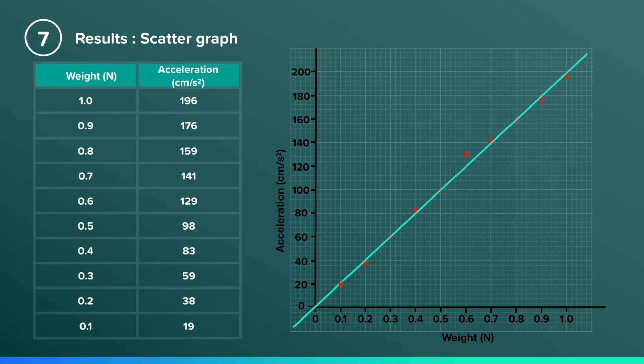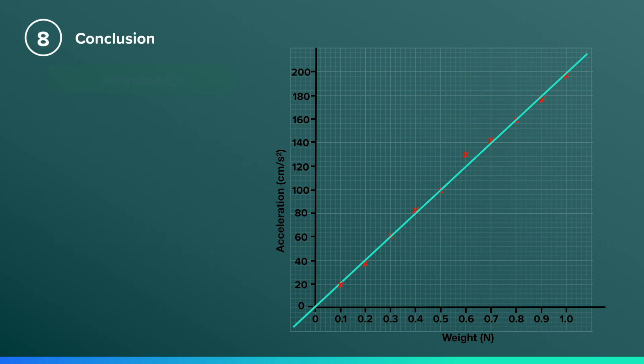You should find that the line of best fit is a straight line, and ideally, it should cross the origin. If your graph is a straight line and it does cross the origin, you can describe the weight applied and the acceleration of the system to be directly proportional to each other.